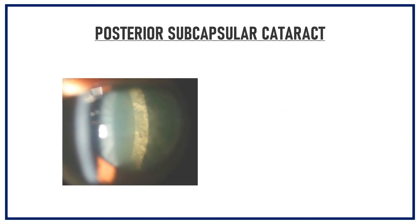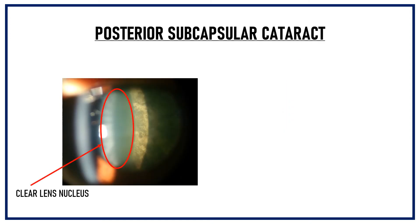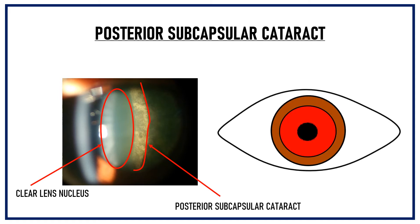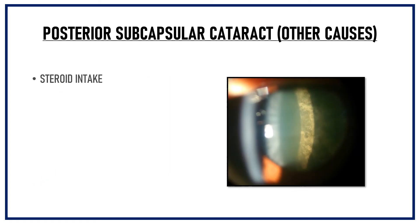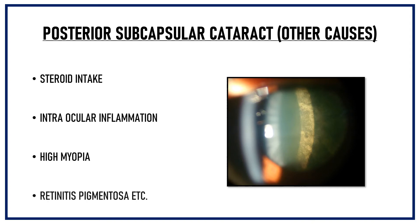In this slit lamp picture, the lens nucleus is clear, but if you trace the posterior slit beam, you can see this diffuse opacity — this is posterior subcapsular cataract. If you see this case on distant direct illumination or on retro-illumination on slit lamp, it will appear as a dark shadow against the red fundal glow, like you can see here. Posterior subcapsular cataracts can also occur due to various other causes like steroid intake, intraocular inflammation, high myopia, retinitis pigmentosa, etc.